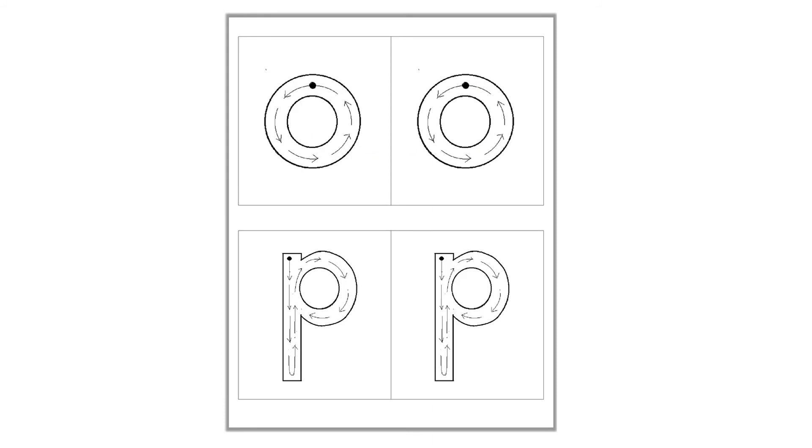Here we are going to learn how to write O and P. We are going to start with this dot and follow this arrow. Watch first. Can you trace on your worksheet on O?